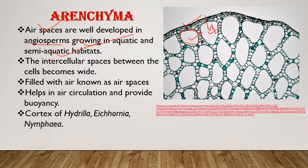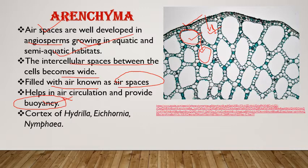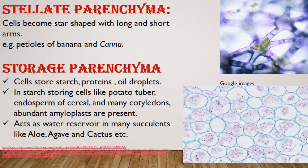Aerenchyma is well-developed in angiosperms. These air chambers are filled with air and also known as air spaces. They help increase the floating capacity of the plant. Aerenchyma is mostly present in the cortex of hydrophytes such as Hydrilla, Isoetes, Nymphaea, and Potamogeton.